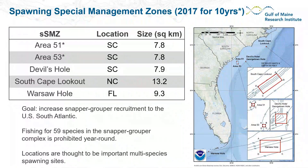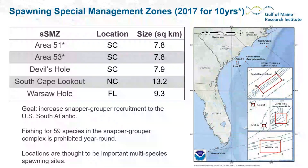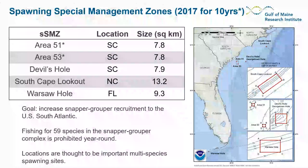These locations were identified largely because they're thought to be important multi-species spawning areas in the Atlantic. One important consideration for these marine protected areas is whether the oceanographic currents facilitate recruitment to the population or whether they might sweep larvae offshore. To study that, we use simulation modeling specifically designed to simulate larval dispersal from these areas as well as other areas in the Atlantic where we know these species spawn.